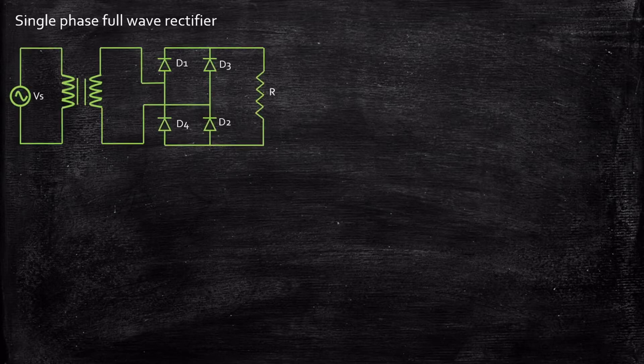Hello everyone. In today's video we're going to take a look at single phase full wave rectifier. This is a circuit diagram of a single phase full wave rectifier. Fundamentally, a rectifier is basically a device that is used to convert AC to DC. That is, when you're applying an AC sinusoidal signal at the supply terminals, we will be getting a DC voltage at the load terminals.